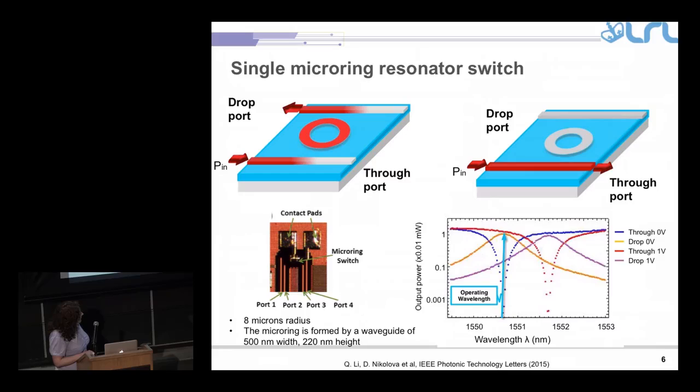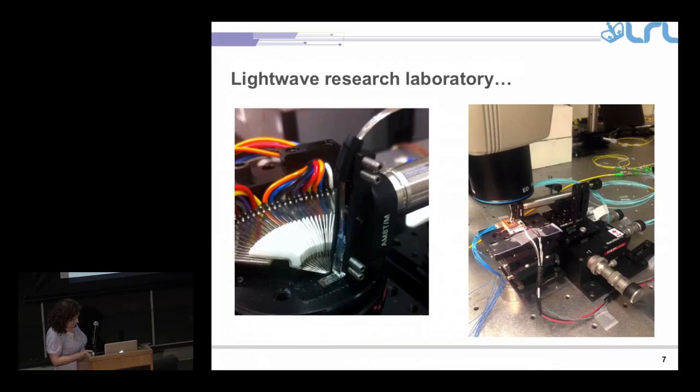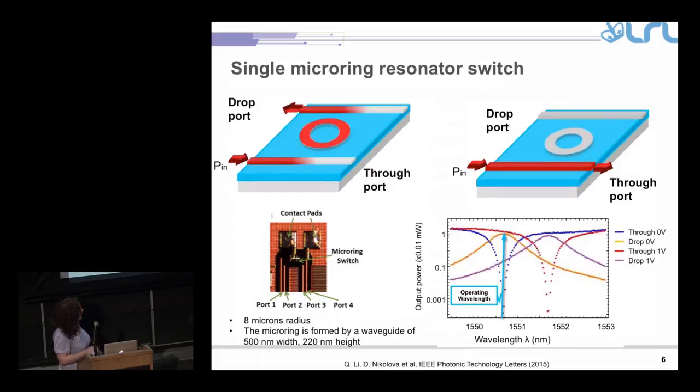For example, the blue line here is what's measured on through port, and the orange line is what is measured on the drop port. At the operating wavelength, we can see that on the blue line, there is almost nothing coming out on the through port, but everything is on the drop port. If we apply small voltage, one volt for example, the resonance shifts, and now the red line represents the through port, and the purple one, the drop port. We can see that now all the power will be going to the through port, and very little will go to the drop port.